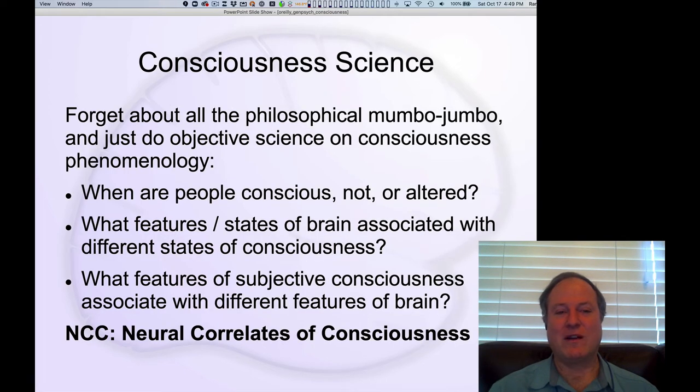So now we're going to move on to the more pragmatic aspects of consciousness. Forget about all this philosophical mumbo jumbo, all these hard problems. Let's just focus on this critical question of when I have different kinds of subjective experiences, what kind of states of the brain are taking place during those states? What is the relationship, the neural correlates of consciousness? What is the relationship between brain states and subjective conscious states? This is something that we can do scientifically.